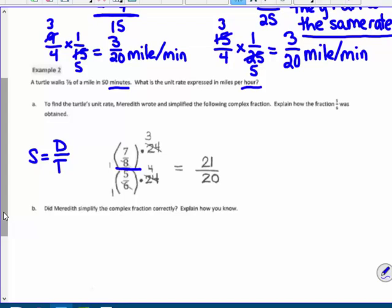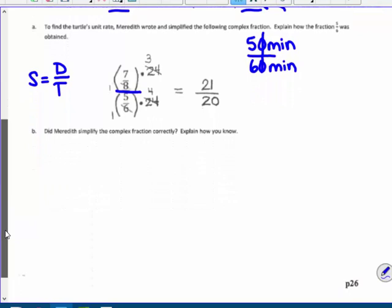Explain how the fraction 5/6 was obtained. Well, because we want that 50 minutes as part of an hour. Well, compare it to the whole hour, which has 60 minutes, because remember, we want to know what is the miles per hour here. That's 5/6. So, that's where that denominator of 5/6 comes from.